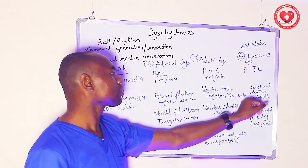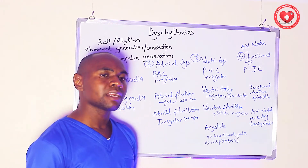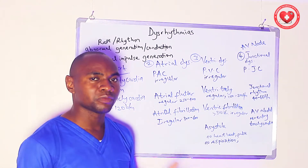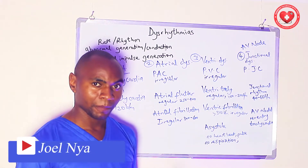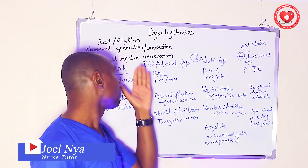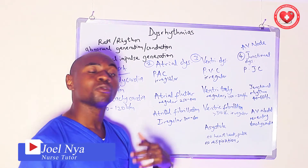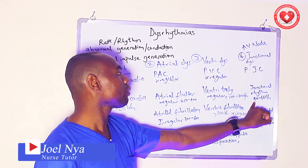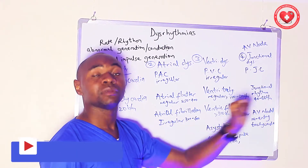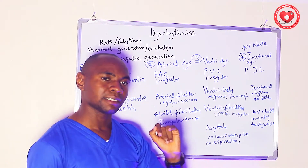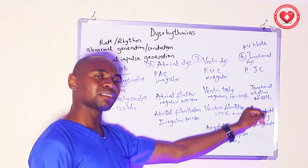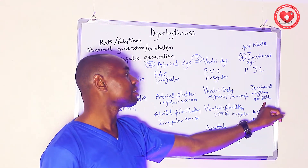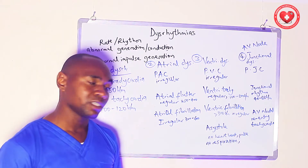Another type is junctional rhythm, where the AV node takes the place of the pacemaker in the heart instead of the sinoatrial node, beating at a rate of 40 to 60 beats per minute. We could also have junctional bradycardia, which is lower than 40 beats per minute, and junctional tachycardia, which is greater than 60 beats per minute.